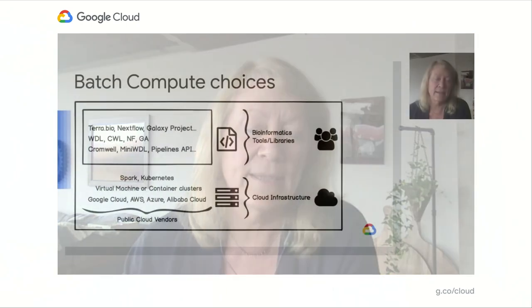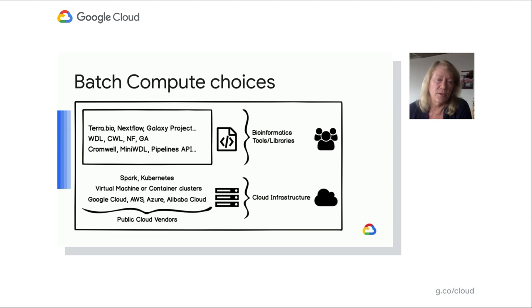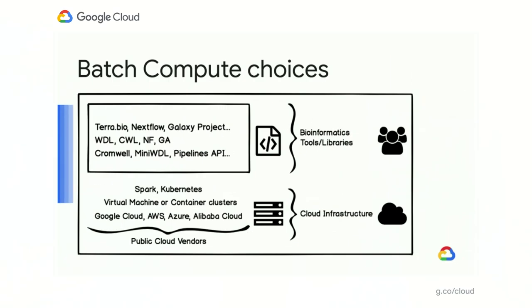If you start at the bottom of the diagram, although today we're talking about the Google Cloud, many of my researchers are faced with the additional complexity of collaborating with researchers who work with a different vendor cloud. On top of that, they'll build their analysis on clusters of virtual machines and increasingly containers. And on top of that, many of them are now starting to use orchestration layers such as Spark or Kubernetes. On top of all that cloud infrastructure, researchers are often using bioinformatics tools and libraries such as Terra.Bio, Nextflow, Galaxy, and more.